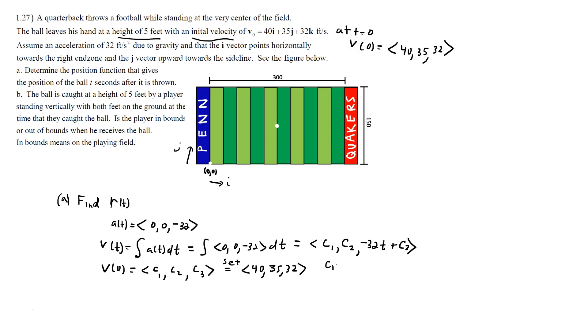C1 has to be 40, C2 has to be 35, and C3 has to be 32. So then this gives us our velocity function. It is 40, 35, and negative 32T plus 32.